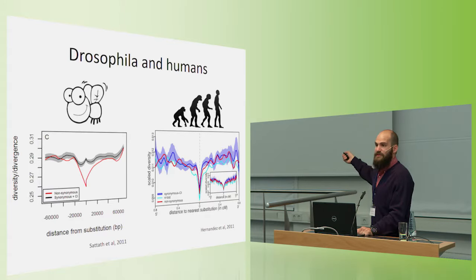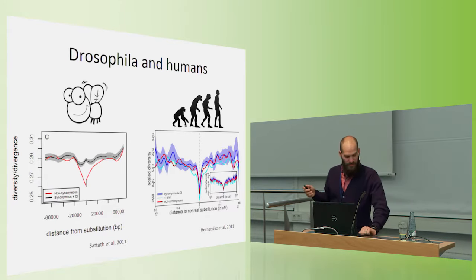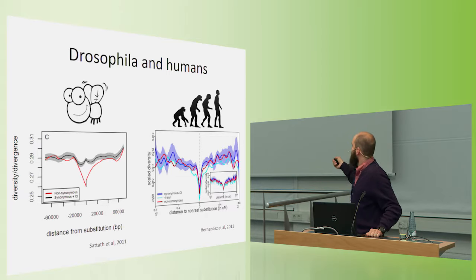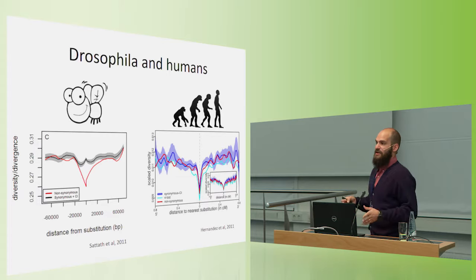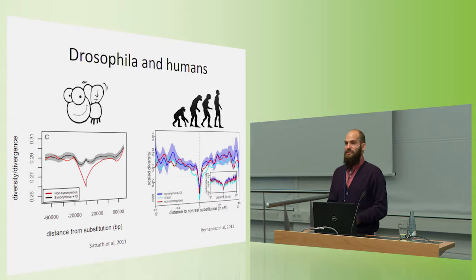In humans, we see a very different pattern. Humans show that you have similar reductions of diversity for both non-synonymous or surrounding both non-synonymous and synonymous substitutions. This indicates that for humans, hard sweeps on new mutations or strong selection on beneficial new mutations have not been the primary driver of evolution, but it's been something else.